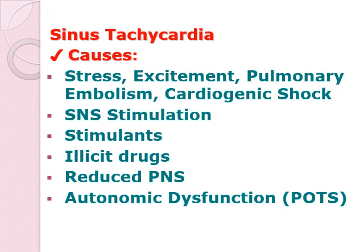The next sinus rhythm is sinus tachycardia — tachycardia means increased heart rate. Causes include stress, excitement, pulmonary embolism, or cardiogenic shock as a compensatory mechanism. Other causes include SNS stimulation, use of stimulants such as drugs, caffeine, alcohol, and nicotine, excessive sympathetic stimulation with reduced parasympathetic functioning. If there is enhanced automaticity of the SA node with reduced parasympathetic tone, it is referred to as inappropriate sinus tachycardia.